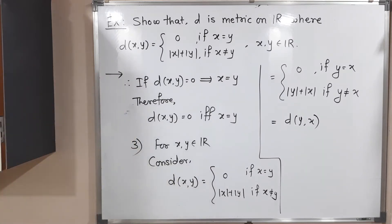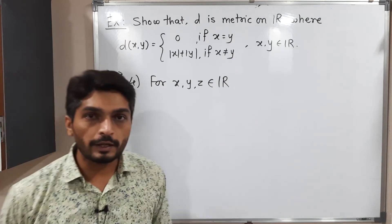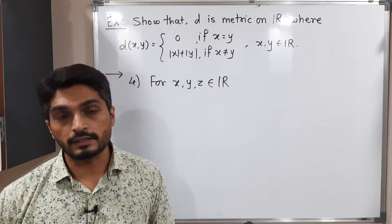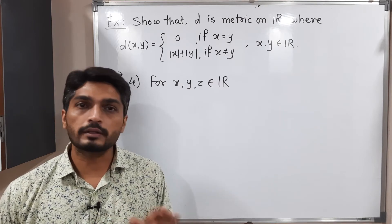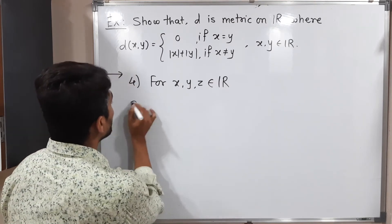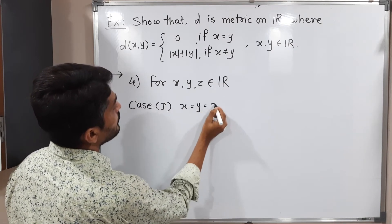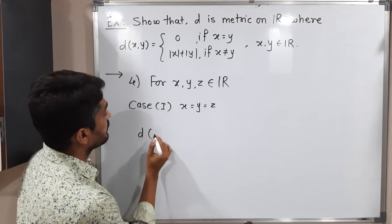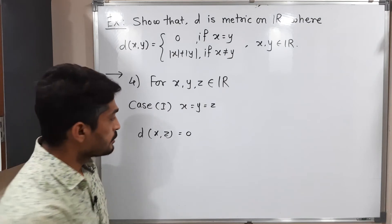Now for the last condition — triangle inequality. We require three elements X, Y, Z ∈ ℝ. We will discuss five cases, similar to what is done for discrete metric spaces. Case 1: X = Y = Z. We start with D(X,Z). Since X and Z are equal, by definition D(X,Z) = 0.